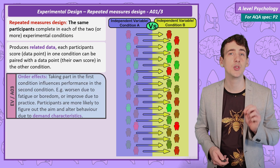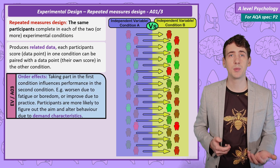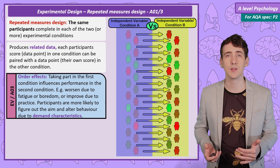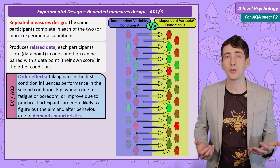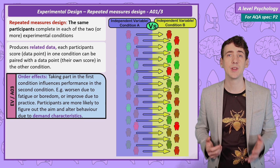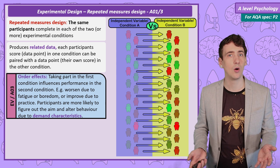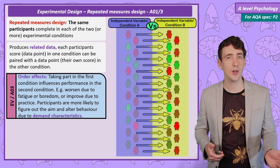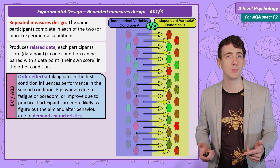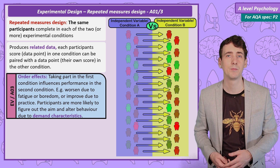But we now have a new problem. If the participants complete both conditions, there might be order effects. People may improve in the second condition because of practice, or they might get worse in the second condition because they're bored or tired.